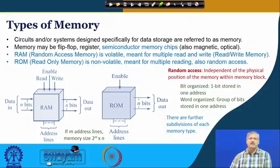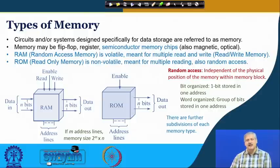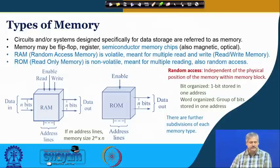Moving on, we begin with the types of memory encountered in digital electronics. Here we are talking about specially designed data storage units. We have seen flip-flops and registers being used as memory, and in this week we shall look more into semiconductor memory chips — specially designed semiconductor memory chips. There are also memory elements in the form of magnetic disk and optical disk used in computers, but those are outside the purview of this discussion; we make use of them when connected as peripherals to a computing platform.